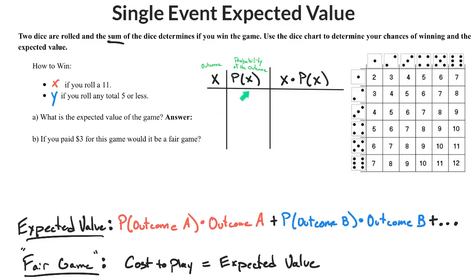The expected value is the probability of the outcome multiplied by what that outcome is. So if I'm going to win X dollars if I roll an 11 — my 11s are right here — there are two 11s, so that would be 2 out of 36. Of course, you could reduce that to 1 out of 18.